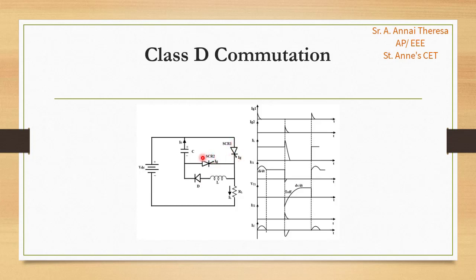The auxiliary thyristor has a resistor in its anode circuit with approximately 10 times the load resistance. By triggering the auxiliary thyristor, the capacitor is charged up to the supply voltage and then the auxiliary thyristor turns off. If there is any extra voltage due to inductance in the input lines, it will be discharged through the diode, inductor, and load circuit.